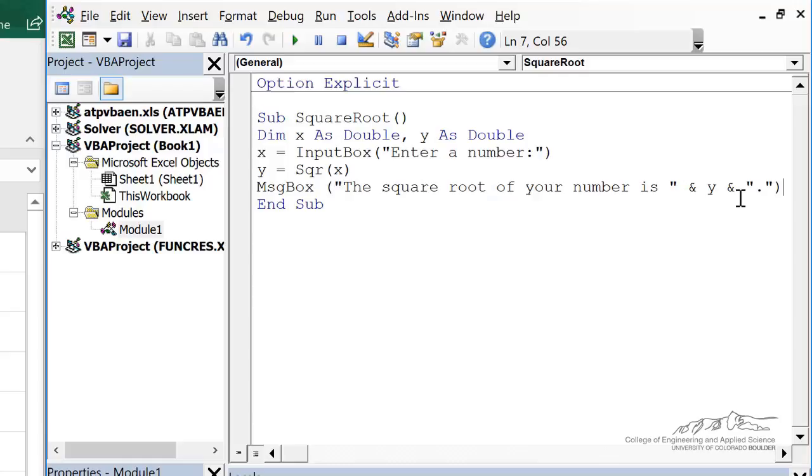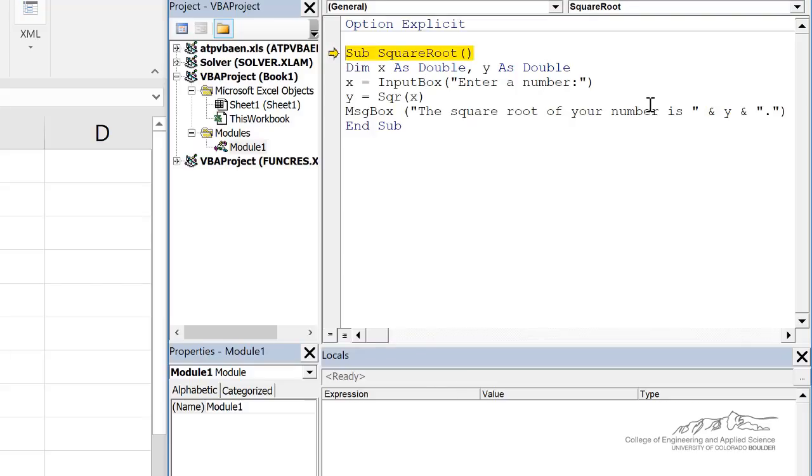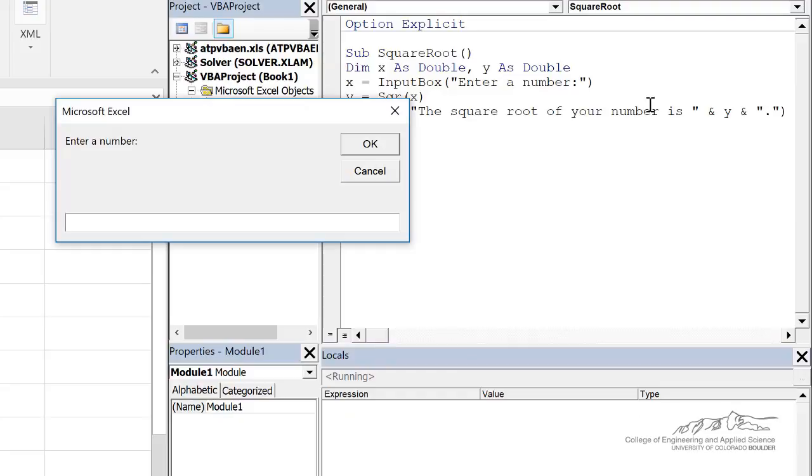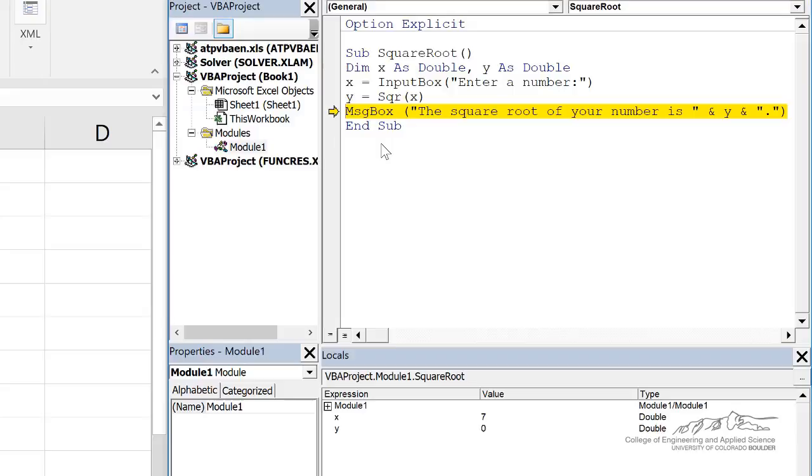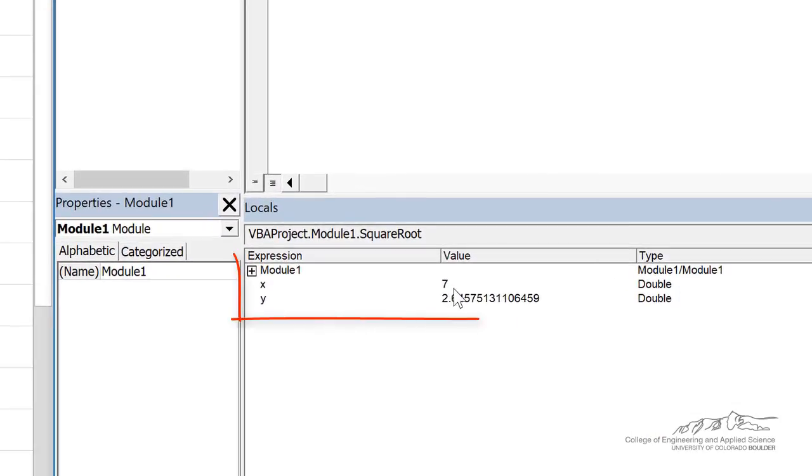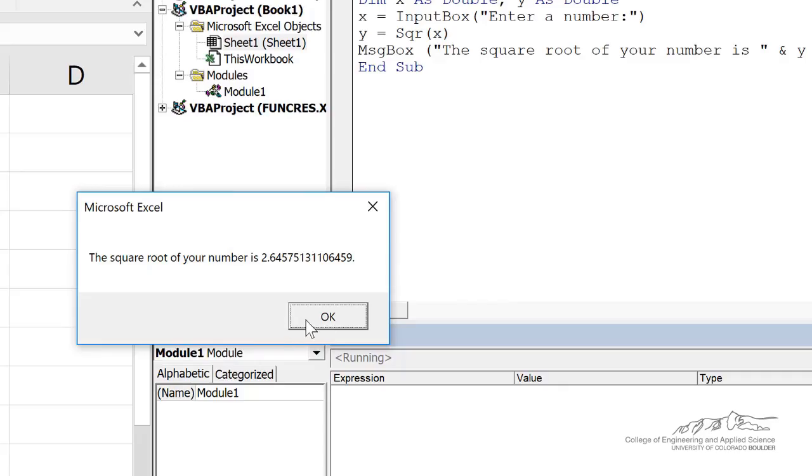The square root of your number is Y. So let's run through this using F8. We obtain a number in the input box. I'll put in 7. We then take the square root. You can look down here in the locals window to make sure that things are being calculated as expected, which they are. I'll put that in a message box.